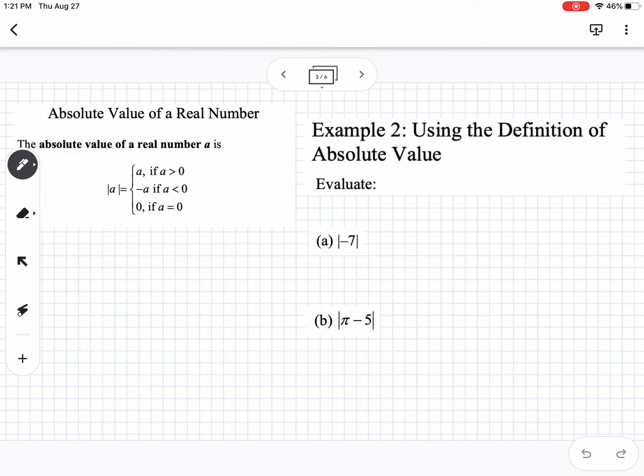Okay, absolute value. So you think of absolute value as the distance something is from zero. So this is kind of a quick little, if A is positive, so if you have a positive number, the absolute value of that number is just going to be the same as what the number is. If it's negative, it's going to be opposite, and if it's zero, it's just zero.